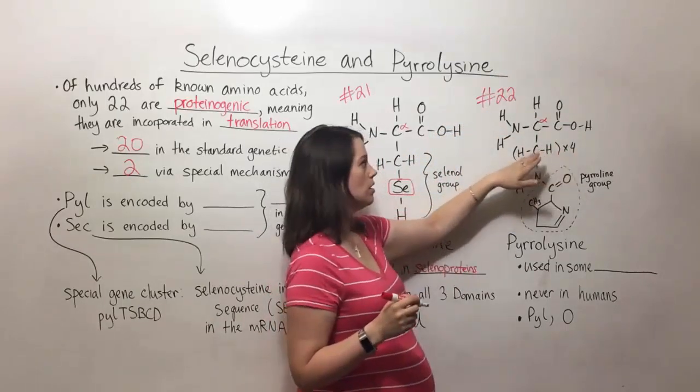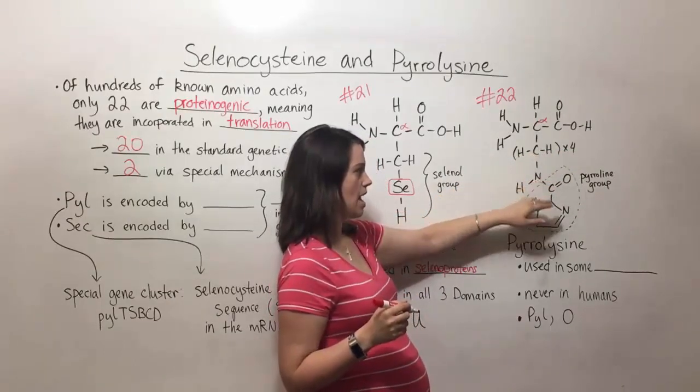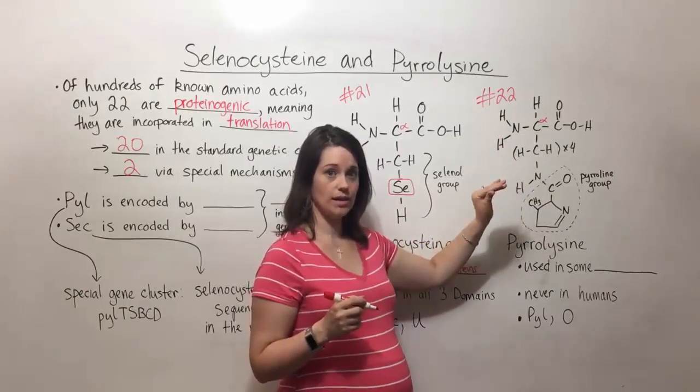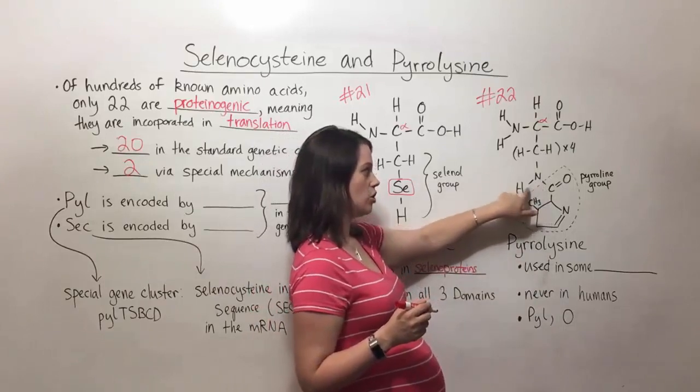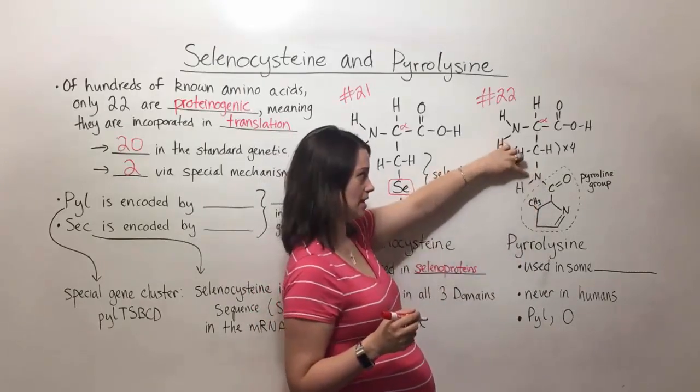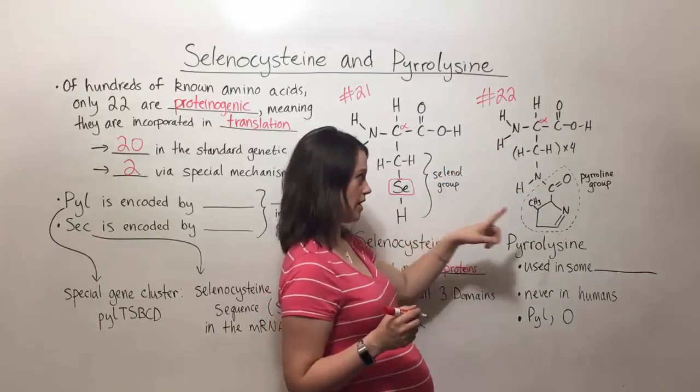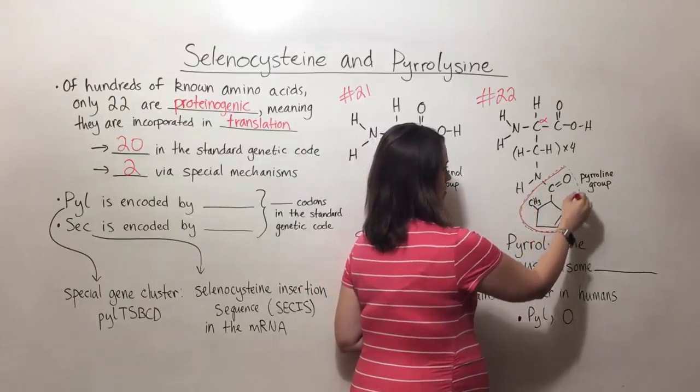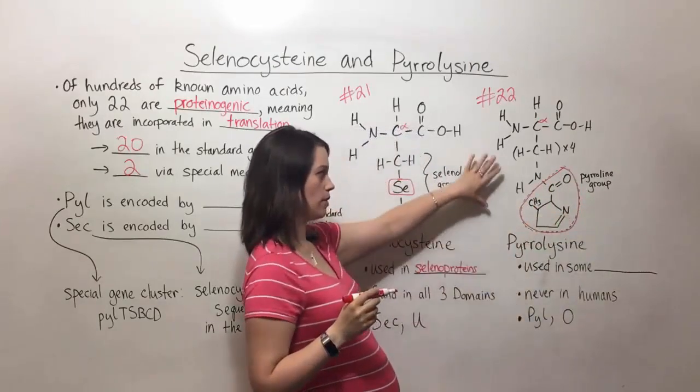So you have four CH2 groups and then a nitrogen. And this probably looks familiar to you as well. This is what lysine would look like, except lysine has two hydrogens connected to this nitrogen. And in pyrolysine, one of those hydrogens has been replaced with this right here, which is a pyroline group. And so this is pyrolysine.